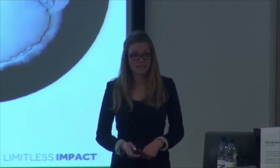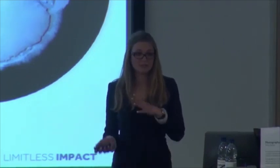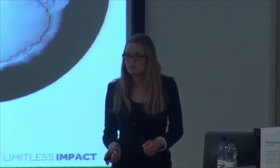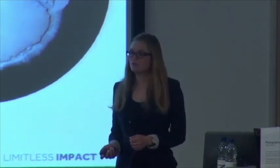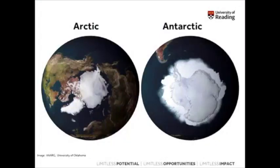These regions are opposite in many ways other than just their names and their location on the globe. If we look at the Arctic first, the Arctic is actually ocean surrounded by land. We can see here — this is the UK down here, this is kind of Russia, and then America and Canada around here. There is a bit of land covered in ice in the Arctic, which is Greenland here, but mostly all this area is ocean. Surprisingly, a lot of people don't realise this isn't actually land — the North Pole isn't on land, it's just one big ocean.